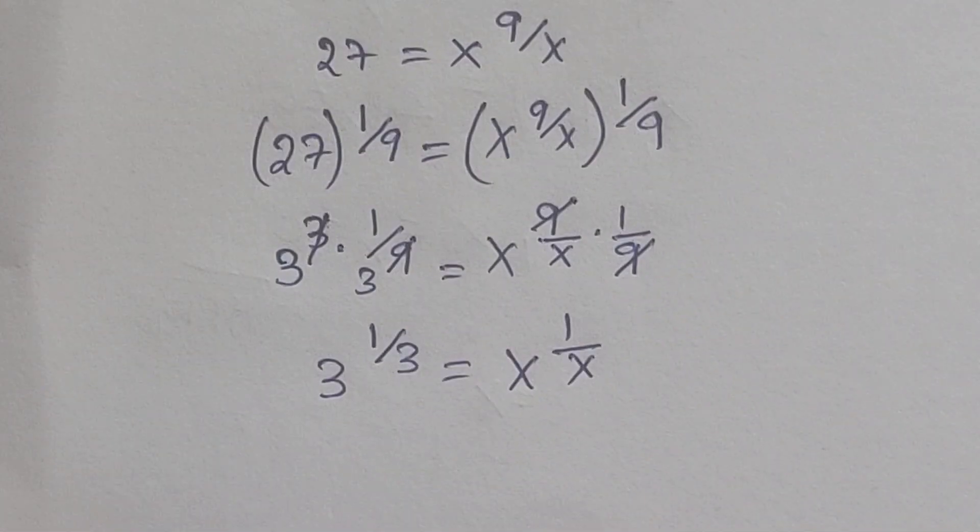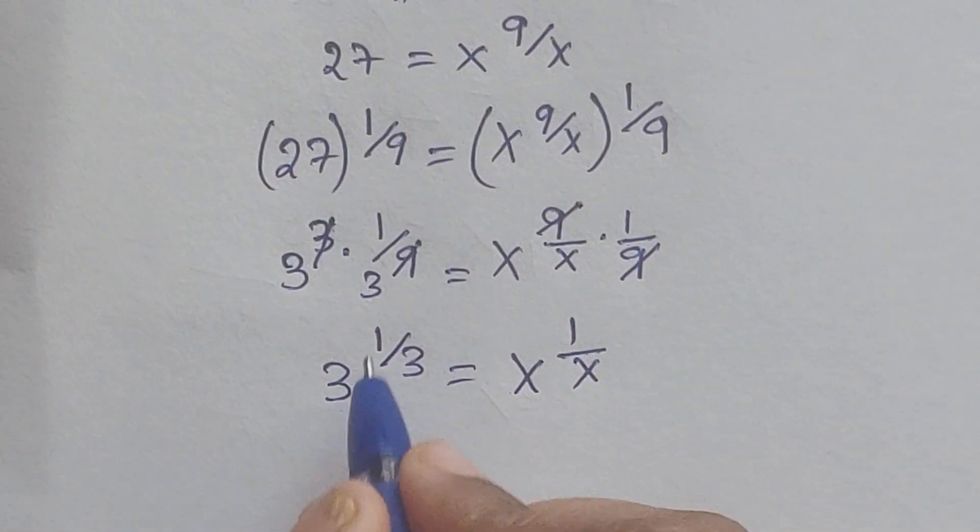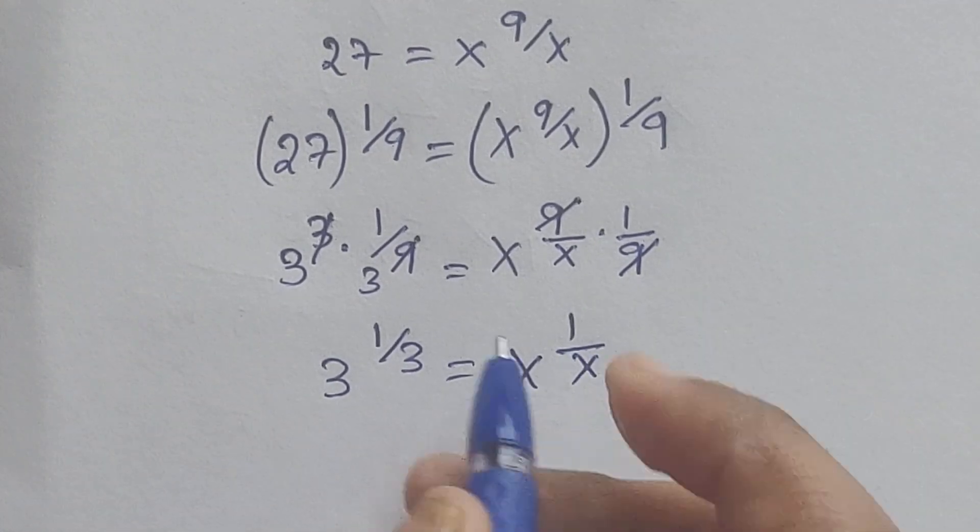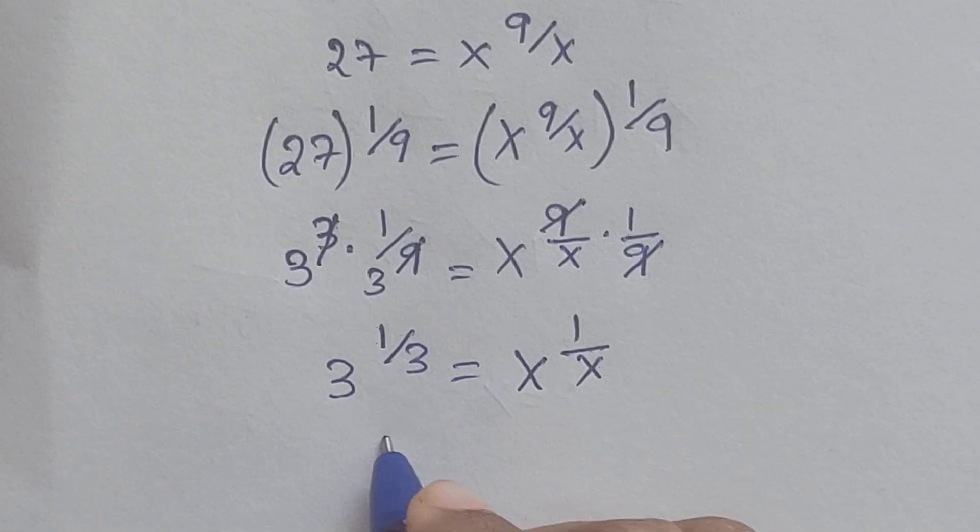Here 3 to the power of 1 by 3 equals x to the power of 1 by x. So x equals 3.